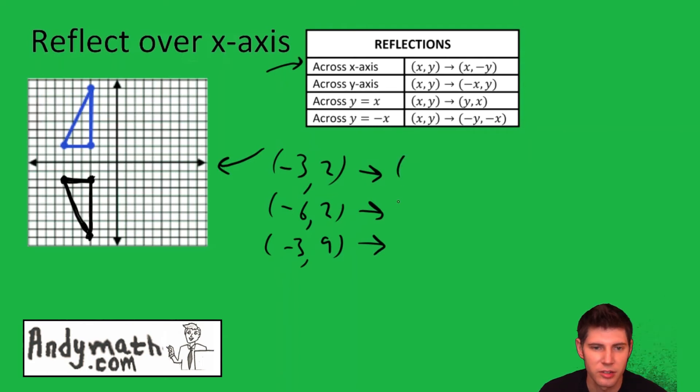It says rewrite the x. So I'll do that first. Negative 3, negative 6, negative 3. Then it says make the y the opposite of what it was. Negative y. So it says y goes to negative y. That's the opposite of what it was. So the opposite of 2 is negative 2, negative 2, and negative 9.